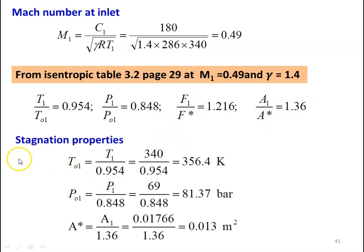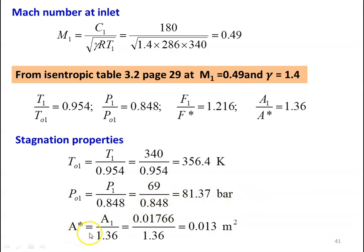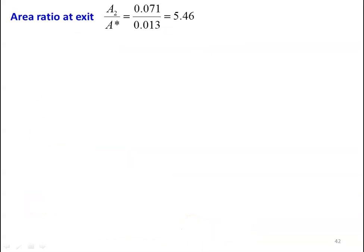The stagnation properties: T01 equal to T1 divided by 0.954, equal to 340 divided by 0.954, equal to 356.4 Kelvin. P01 equal to P1 divided by 0.848, equal to 69 divided by 0.848, equal to 81.37 kilo Pascal. Area at the throat section A* equal to A1 by 1.36, equal to 0.0176 divided by 1.36, equal to 0.013 meter square. Area ratio at the exit A2/A* equal to 0.071 divided by 0.013, equal to 5.46.